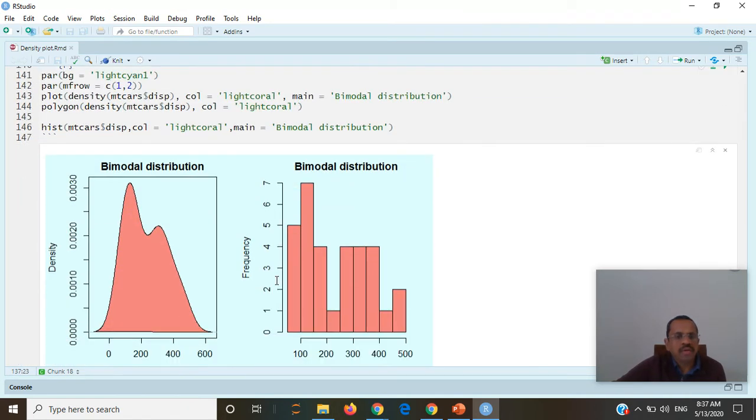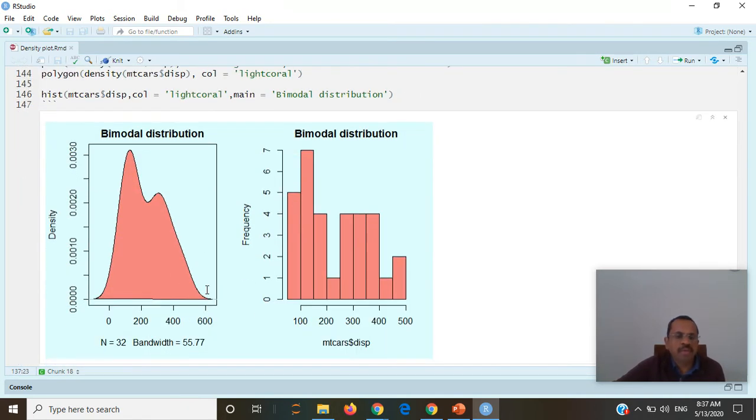This is one of the examples of bimodal distribution shown in histogram as well as density plot. As we can see it is very difficult to judge the bimodal or complicated distribution in histogram but in density plot we can see it very clearly.